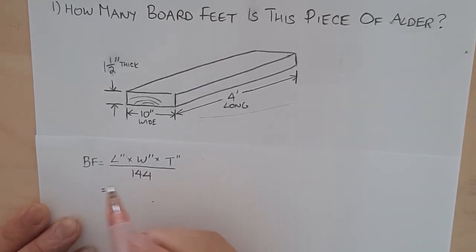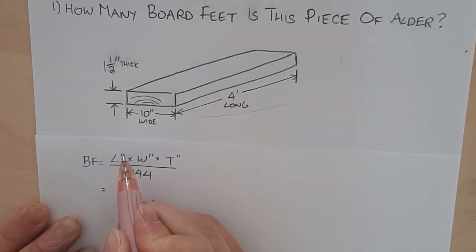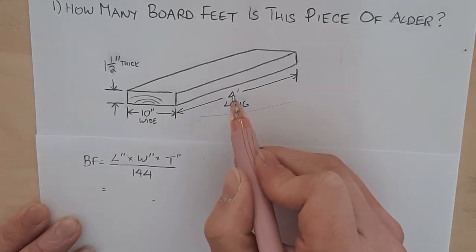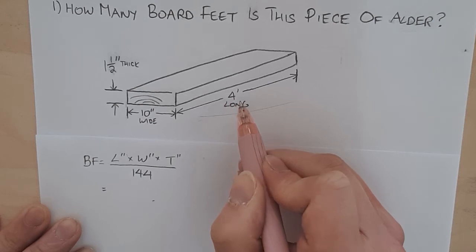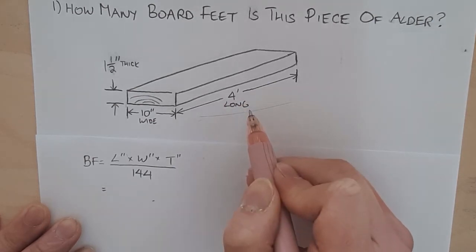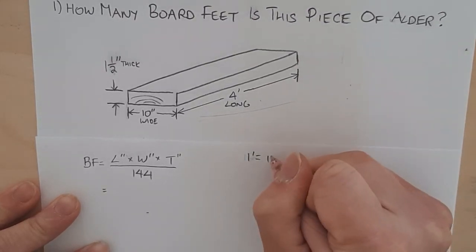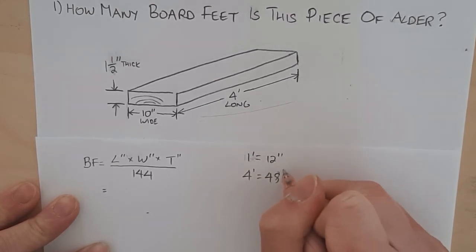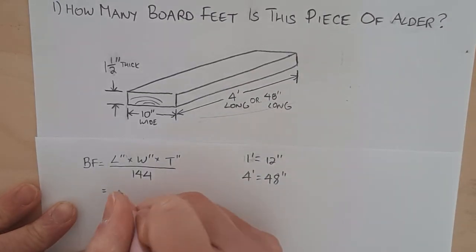So I will start by plugging in the numbers. So we're going to look for the length in inches. And that's over here. But we've got a little bit of a problem. This is four feet. It's not in inches. So I actually have to convert four feet into inches first. So if one foot is 12 inches, four feet is 48 inches. So I'll just take my 48 inches, put that here.